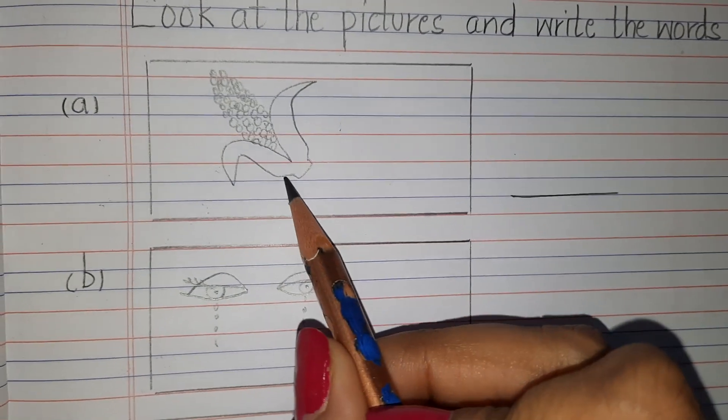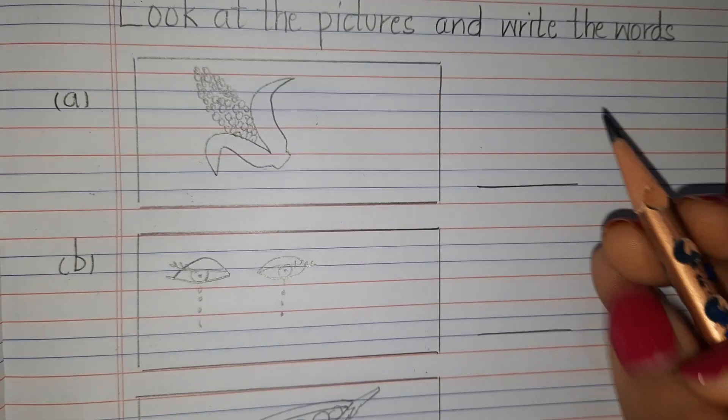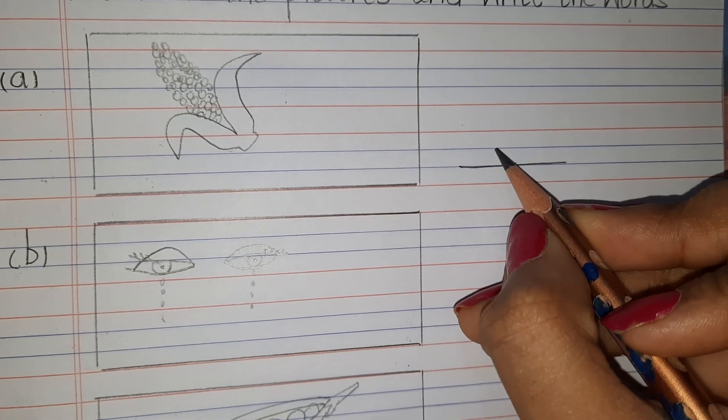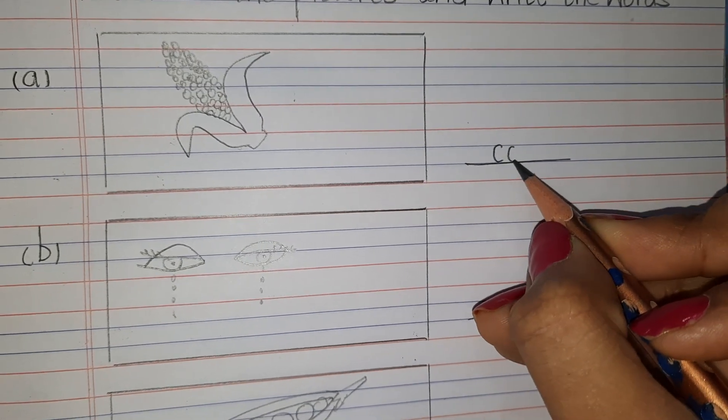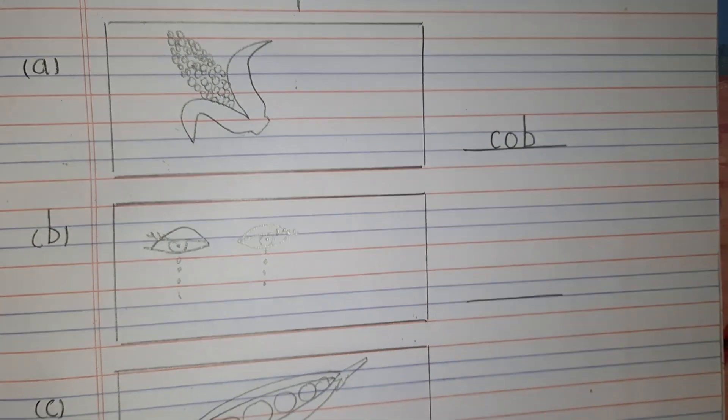The first one, what is this? This is a cob. So what is the spelling of cob? C, O, B, cob.